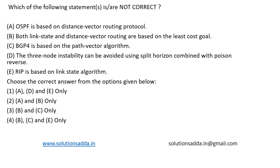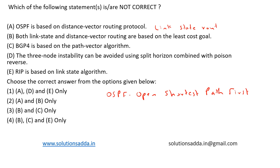This is a question from computer networks. We are asked to find out which statements are not correct. Statement A: OSPF is based on distance vector routing protocol. OSPF stands for Open Shortest Path First, and it is based on link state routing protocol, not distance vector routing. So option A is incorrect — A is false.